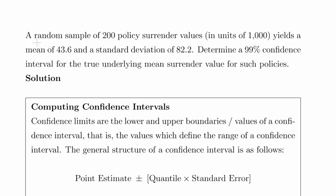Okay, in this presentation we're going to look at confidence intervals for the mean. A random sample of 200 policy surrender values in units of 1,000 yields a mean of 43.6, which is 43.6 thousand, and a standard deviation of 82.2.